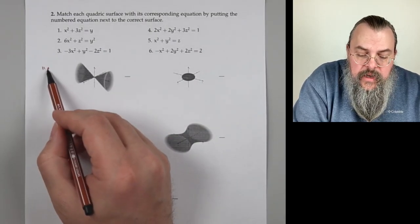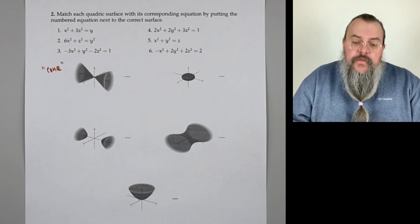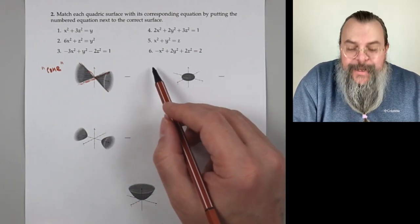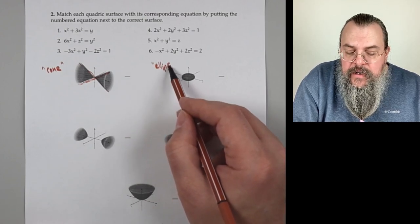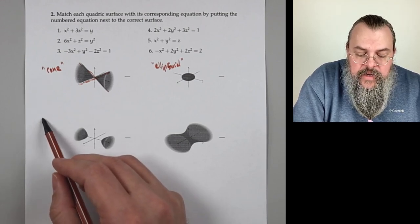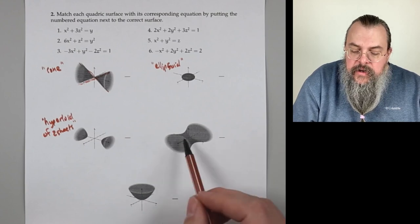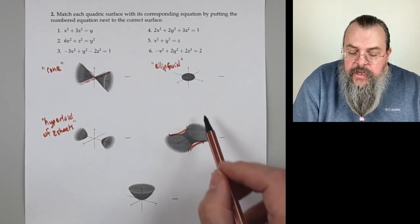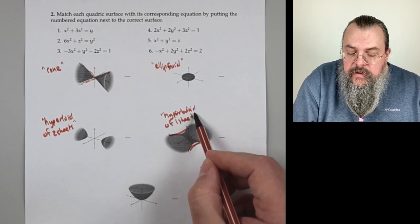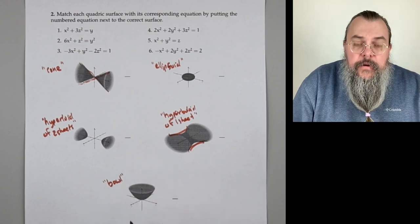So on this one, this is a cone — you can see straight lines flowing through here coming to a point. This one is an ellipsoid, basically the three-dimensional version of an ellipse. Here, this is disconnected — if it's disconnected, it's a hyperboloid of two sheets. And here, it has sort of an hourglass shape but everything's connected — this is a hyperboloid of one sheet. And down here, it's a bowl shape, which we call a paraboloid.